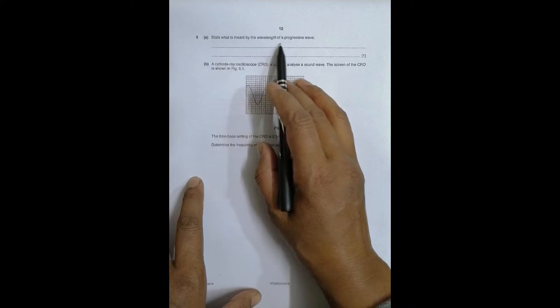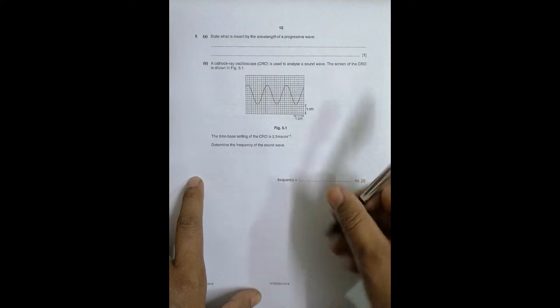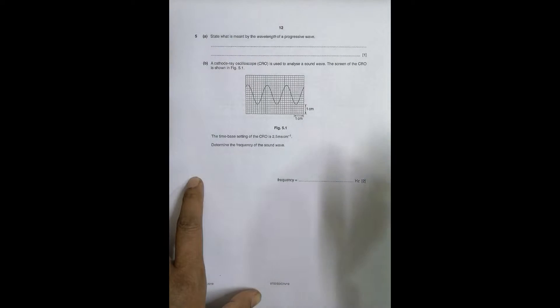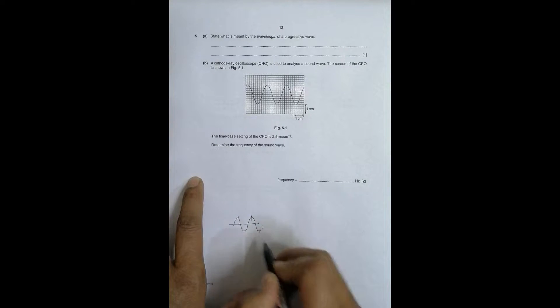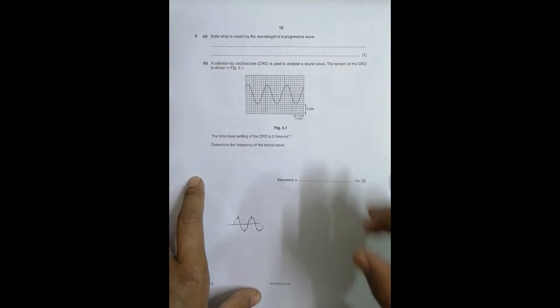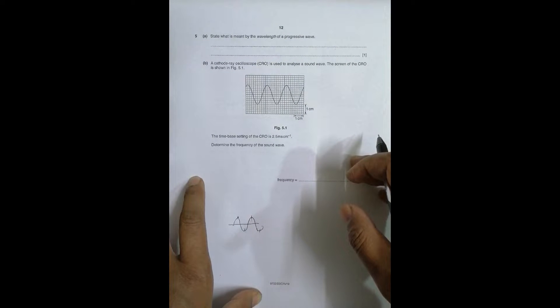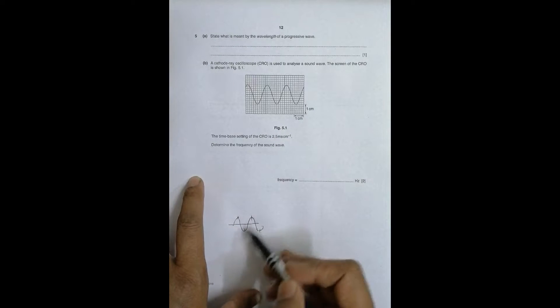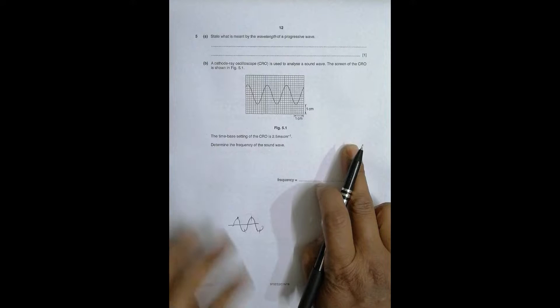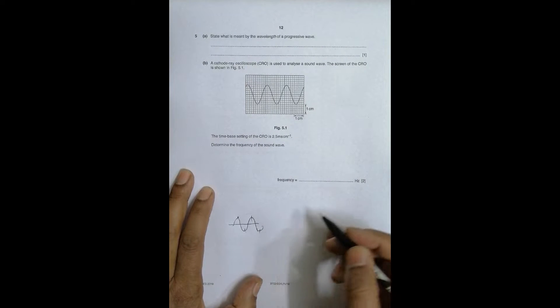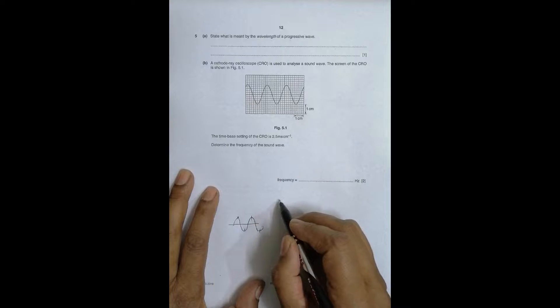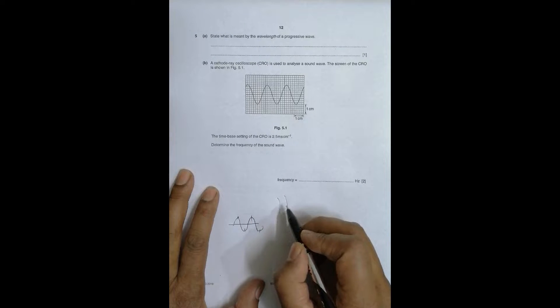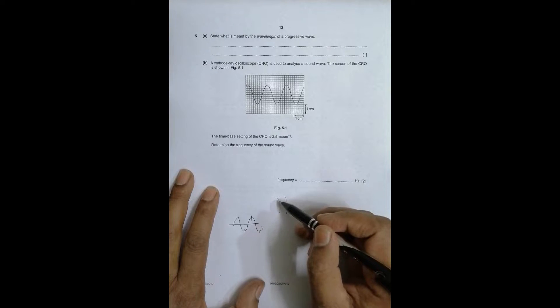Part (a) asks: state what is meant by the wavelength of a progressive wave. At secondary level we were taught that wavelength is the distance between two crests or two troughs of a wave. But as we progress to senior levels we have to take several things into account. One definition is: wavelength is the distance between two adjacent wave fronts.